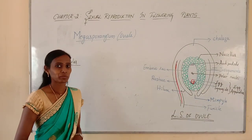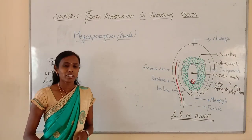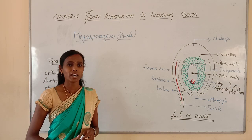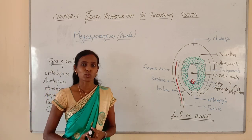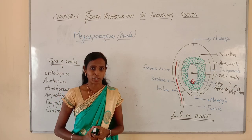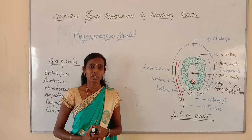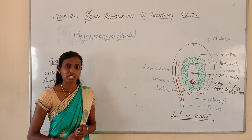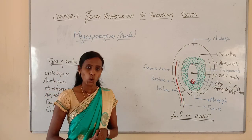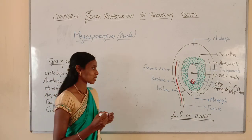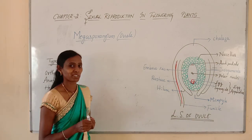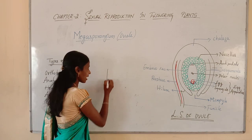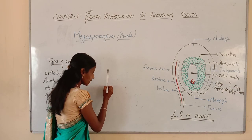Hello students, welcome back to my channel. In the previous class, we discussed about the female reproductive part of the flower, called Pistil or Gynoecium. You know that Pistil comprises of three main parts, namely Stigma, Style, and Ovary. The ovary is the basal swollen portion of the Gynoecium. Let us draw a simple diagram of the Pistil, our Gynoecium.